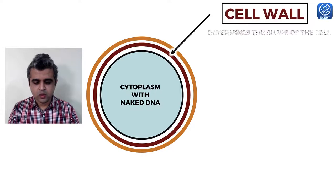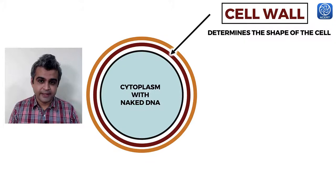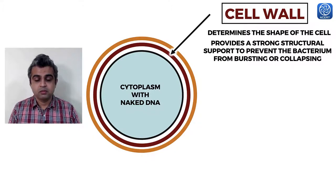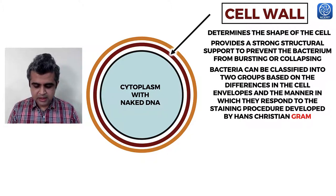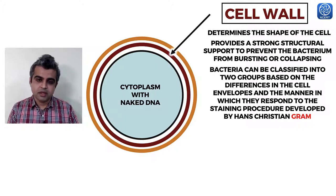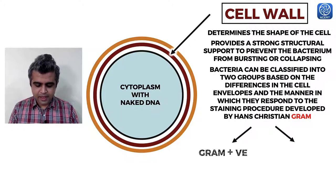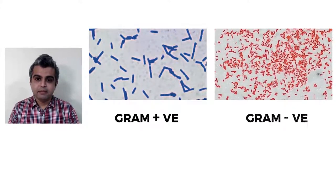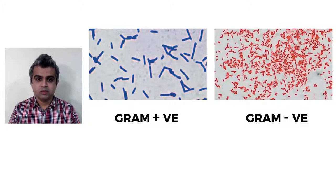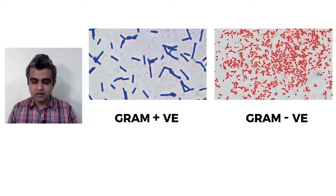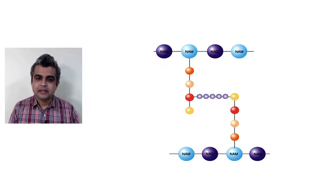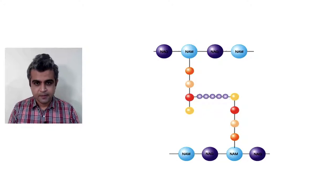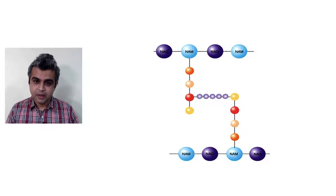The cell wall determines the shape of the cell; it is rigid and made of peptidoglycans, providing strong structural support to prevent the bacteria from bursting or collapsing. Bacteria are classified into two groups based on how they respond to the Gram stain developed by Christian Gram. Gram-positive bacteria stain blue or purple; gram-negative bacteria stain pink or red, depending on the nature of their cell envelope.